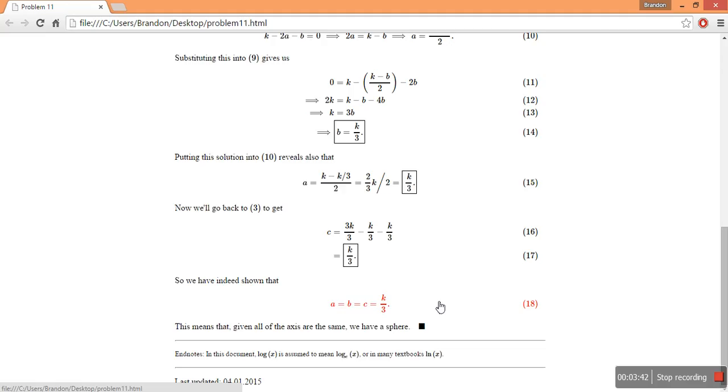And so we see, I rewrote the step, so we see in 18 that a equals b equals c equals k on 3. So we found that all of the axes, all of the distances along the axes, must be the same to have the maximum volume for a given constant k.